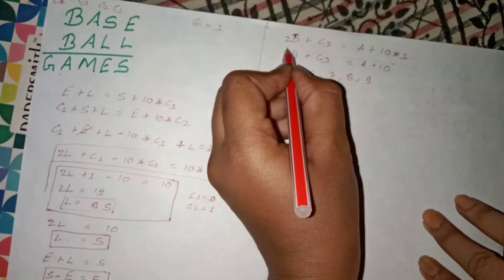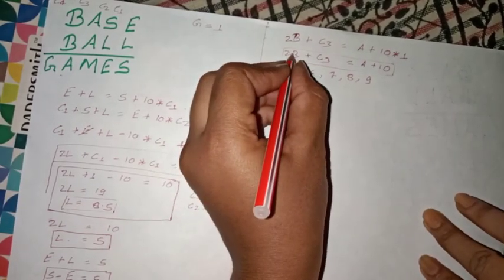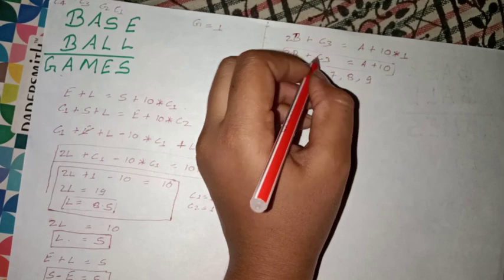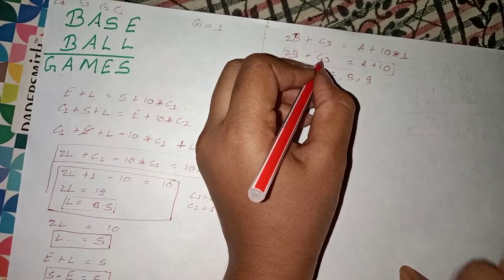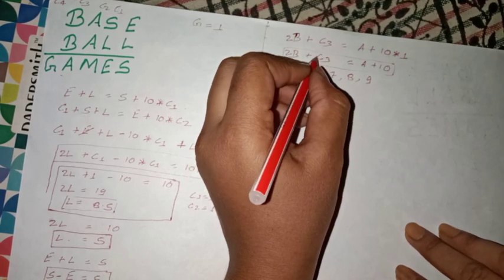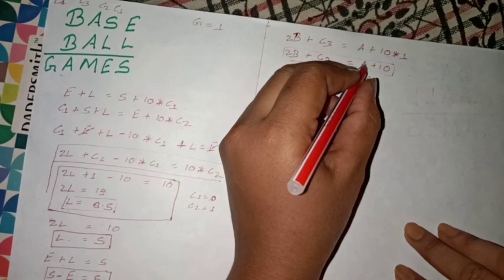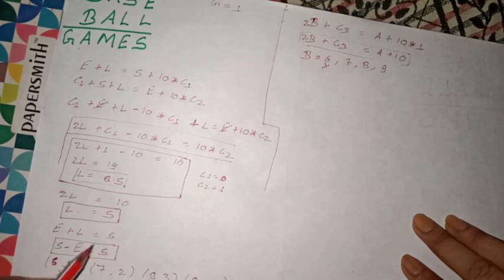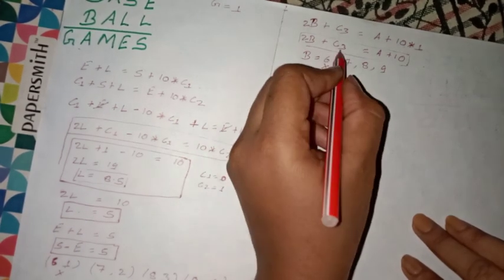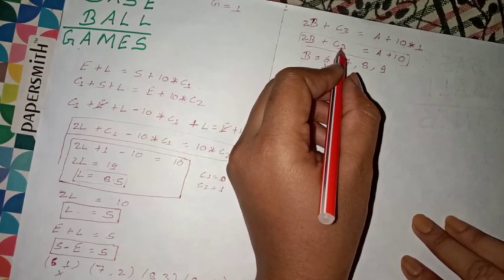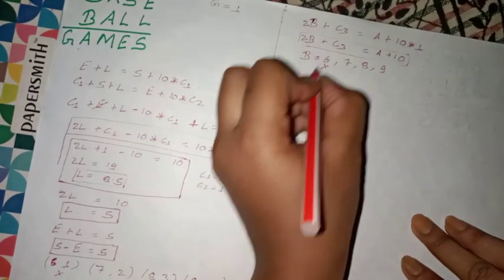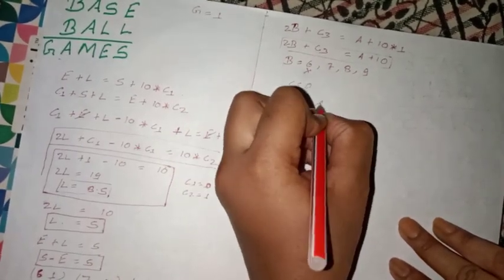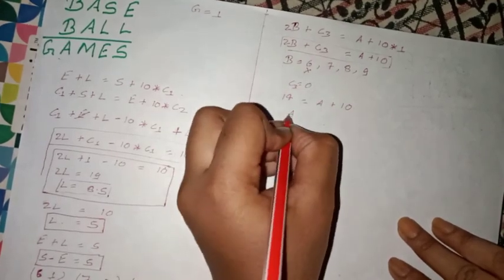So we have B equals 7. Then 7 plus 7 equals 14. We carry 1 from here. If we carry, we get 15, so A equals 5. But L is already 5, so this doesn't satisfy either.